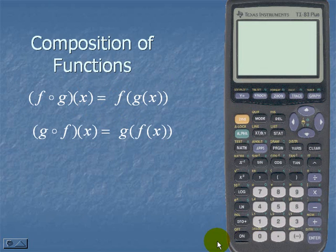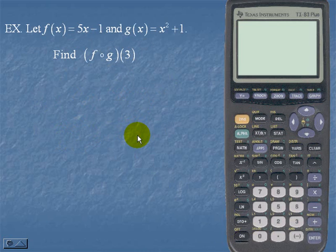Composition of Functions. Let's take a look at the formulas. f circle g of x is equal to f of g of x. g circle f of x is equal to g of f of x.